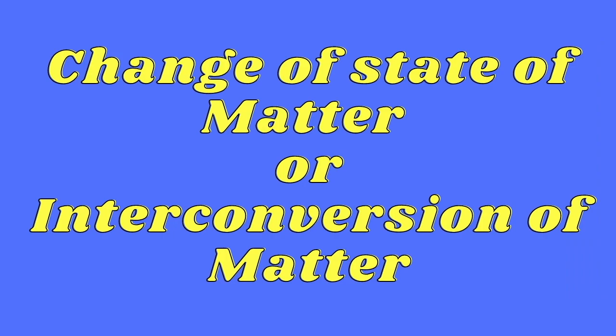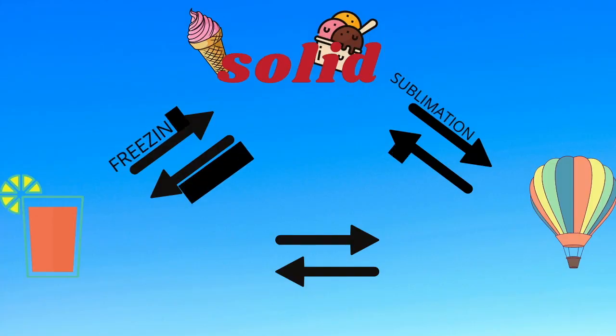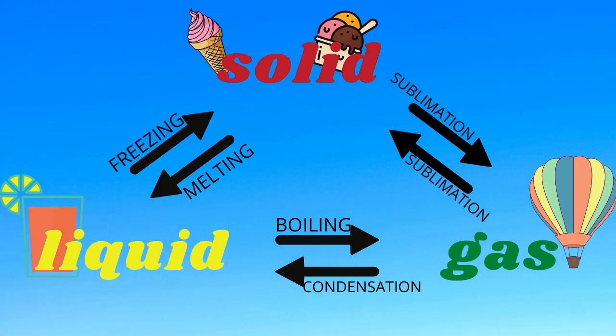This phenomenon is known as freezing or solidification. The entire process is known as the change of state of matter, or interconversion of matter. It involves change in state of matter from one state to another and back to its original state. This change is brought about by a change in temperature or pressure. According to the diagram: solid converts to water on heating — this process is called melting. And on boiling, water changes into water vapor — this process is called boiling or vaporization.